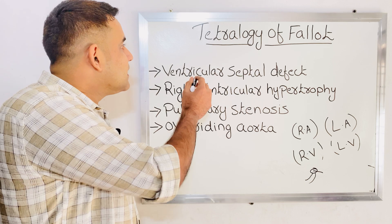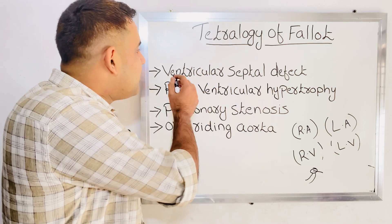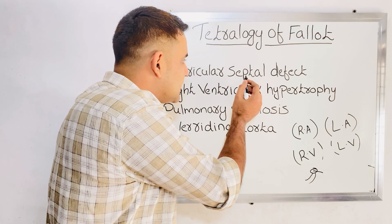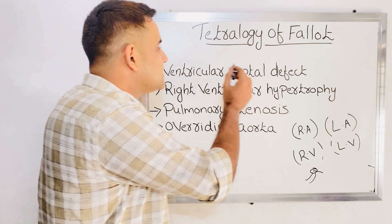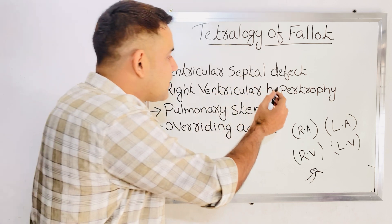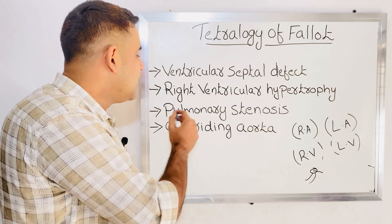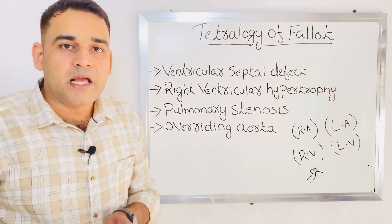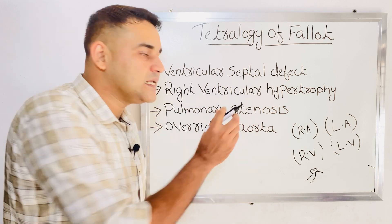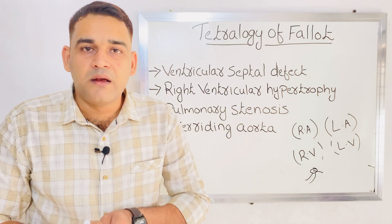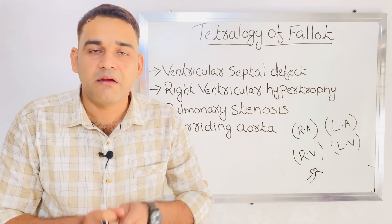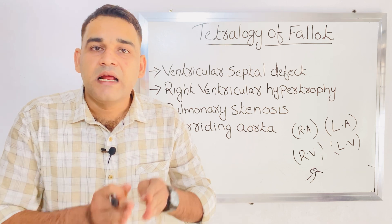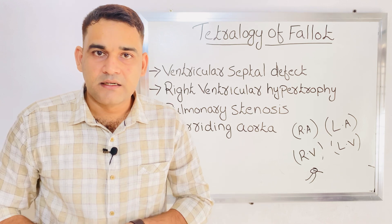So, four conditions are coming under Tetralogy of Fallot: ventricular septal defect — abnormal connection in the septum of the ventricle; right ventricular hypertrophy — enlargement of the right ventricle; pulmonary stenosis — narrowing of the pulmonary valve area; and overriding aorta — abnormal position of the aorta. These are the four conditions under Tetralogy of Fallot.